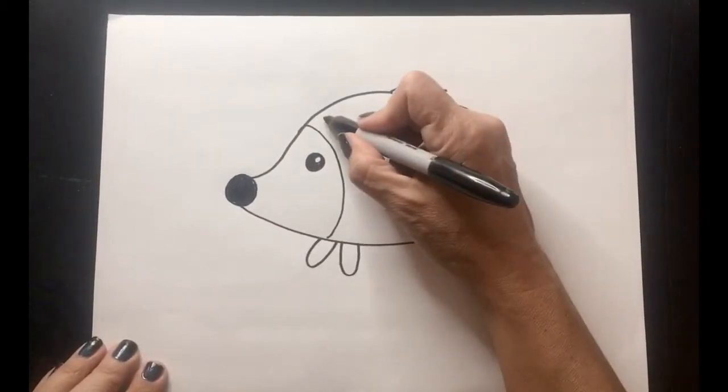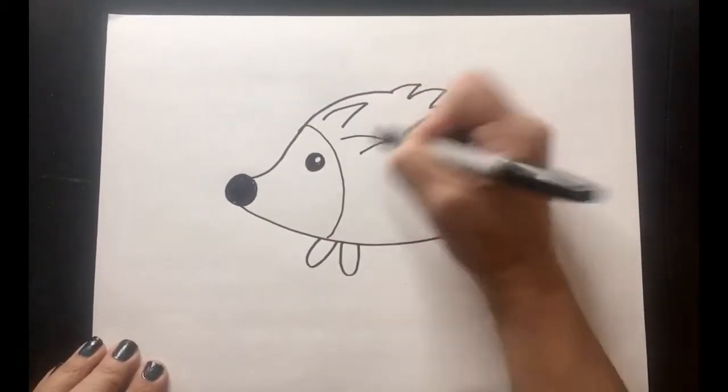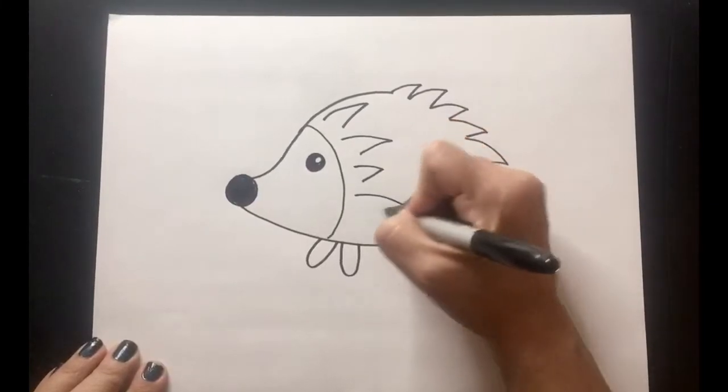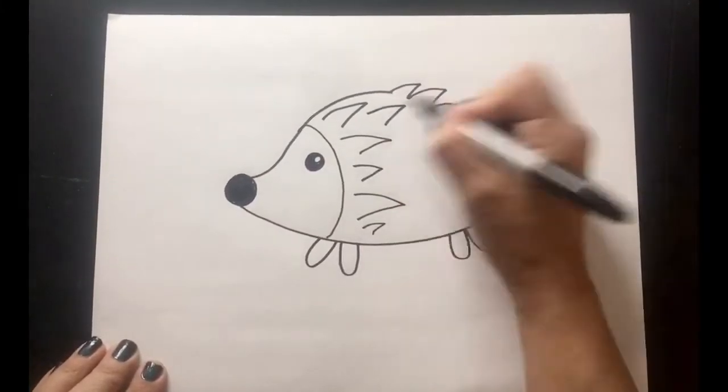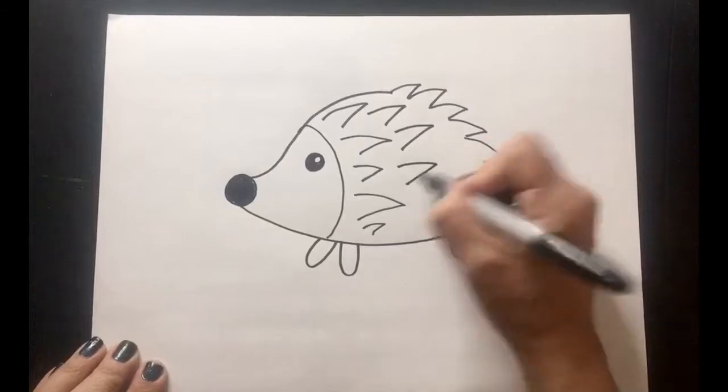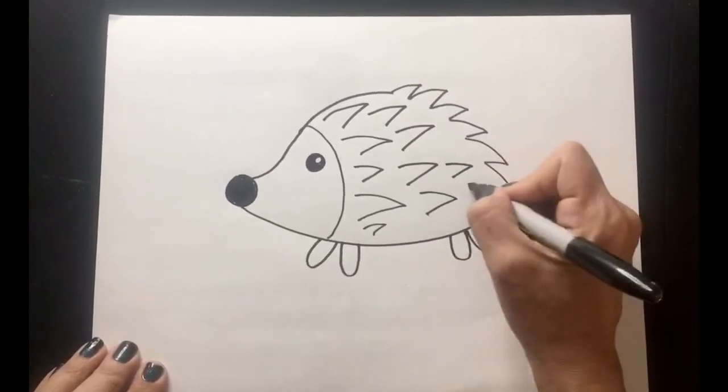I want to add even more texture, so I'm going to fill his body with little V spikes. Notice some of them are big and some of them are small, and I'm filling the whole space with spikes.